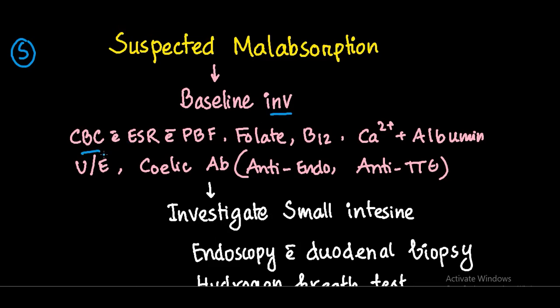In CBC you will get anemia, and in the peripheral blood film you might get microcytic or macrocytic anemia depending on iron, folate, or vitamin B12 deficiency. You also do folate and B12 levels — these are often low, especially in celiac disease. In small intestinal bacterial overgrowth, the B12 level will be low.